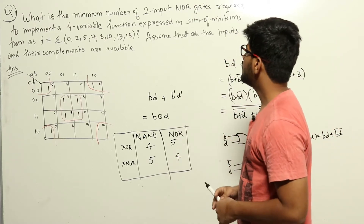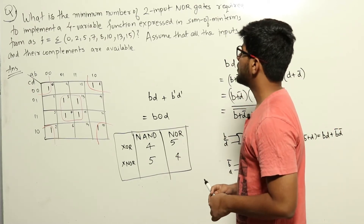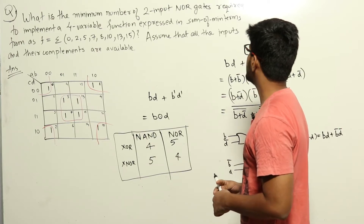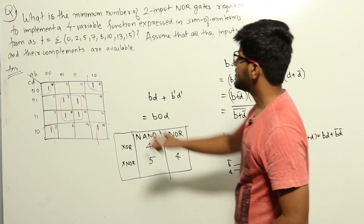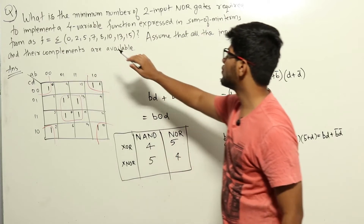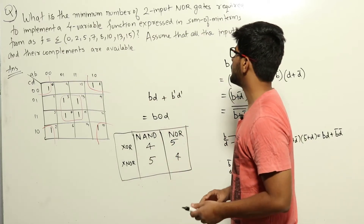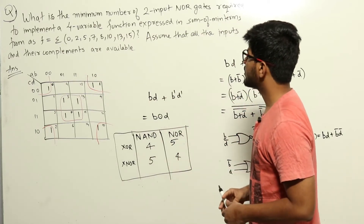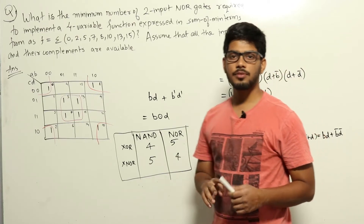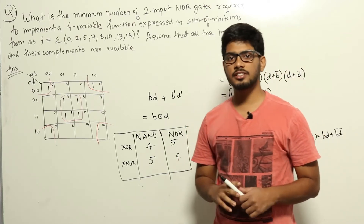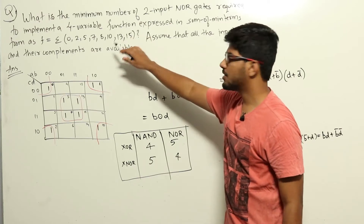What is the minimum number of two-input NOR gates required to implement a four-variable function expressed in sum of minterms form as F = Σ(0, 2, 5, 7, 8, 10, 13, 15)? Assume that the inputs and their complements are available. This is a question from the digital logic section regarding minimization of a function.